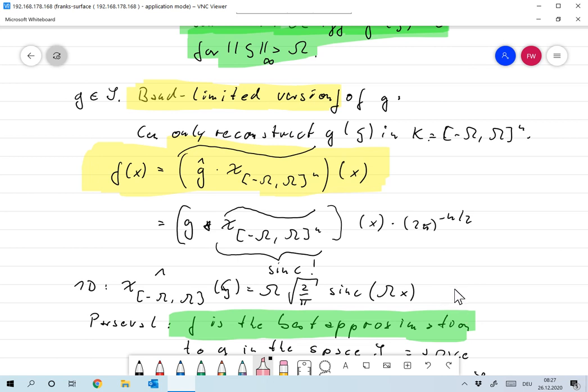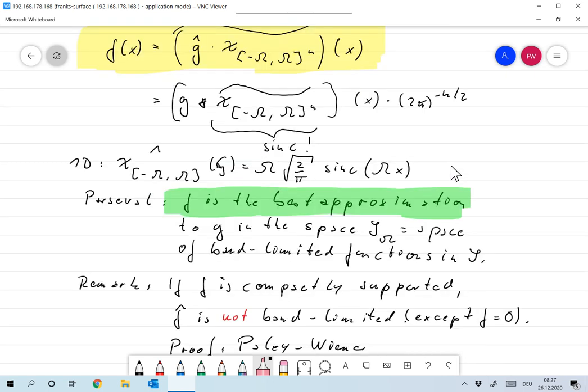Okay, so another remark: using Parseval, you immediately see that f defined in this way is the best approximation to g in the space of all omega band-limited functions in S. So that's the best approximation with respect to the L² norm that you can get there.